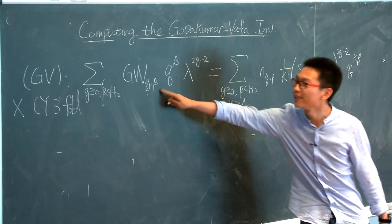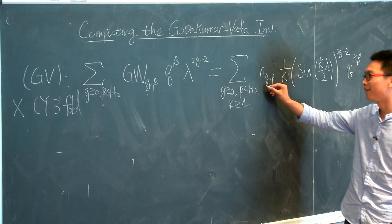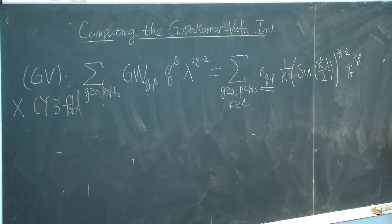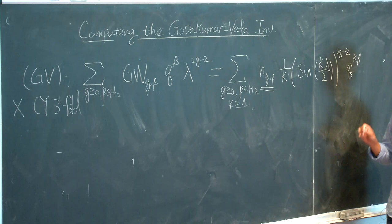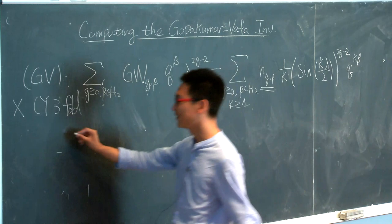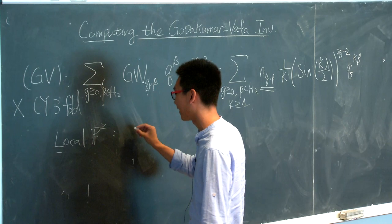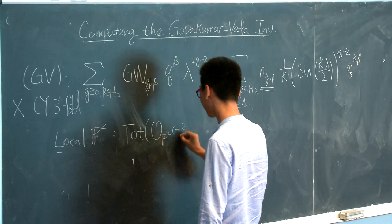Why do we need to care about this invariant? The Gromov-Witten invariant may be something like a rational number. But the Gopakumar-Vafa invariant, surprisingly, they are all integers. They also enjoy more enumerative counting properties — for example, you can extract the 27 lines on the cubic surface by the Gopakumar-Vafa invariant. Today I will only be counting on the case of local P2, which is the physicist's name for the total space of O_{P2}(-3).